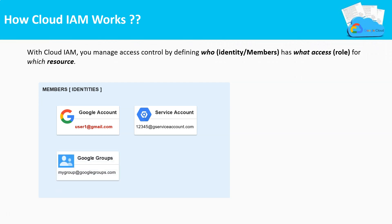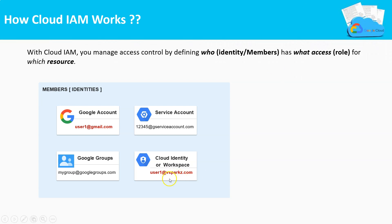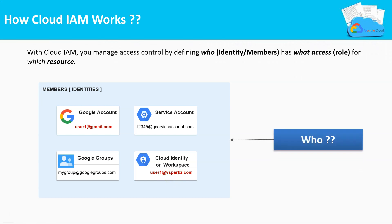It can also be from a Google Groups account. Finally, it can be from a Cloud Identity or Google Workspace organizational account. Google Workspace is formally called G Suite. The organizational user accounts will end with organizational domains. Collectively, all of these are the user identities in Cloud IAM.